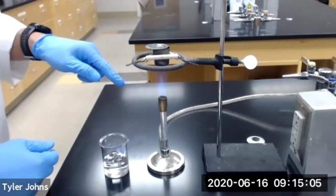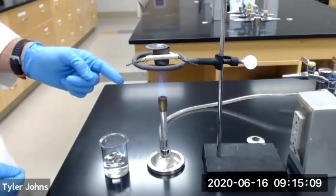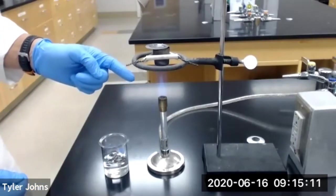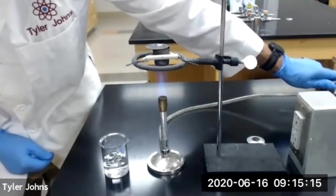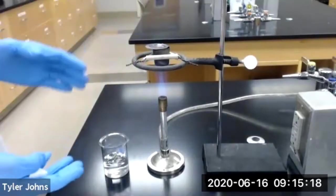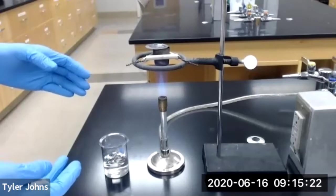We want to make sure that the crucible is positioned about one centimeter above the inner blue cone of our Bunsen burner flame. And we're going to let this heat for five minutes and the crucible bottom should glow red hot.